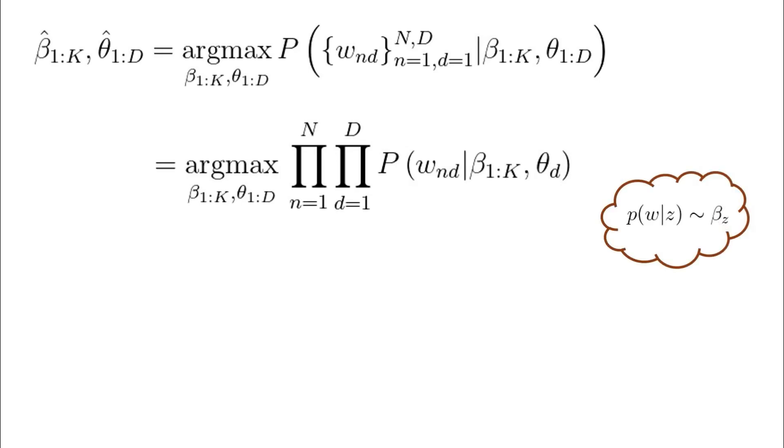which if we remember is the distribution over all words for topic z. Thus to benefit from this relationship, we can apply reverse marginalization on the probability of each word to introduce the latent variable z.